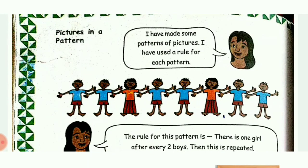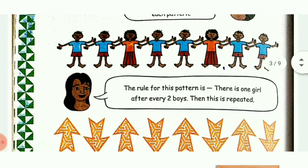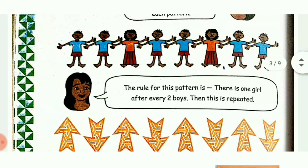Next: pictures in a pattern. I have made some patterns of pictures and used a rule for each pattern. The rule for this pattern is: there is one girl after every two boys, then this is repeated. See the picture - two boys, one girl, two boys, one girl. This is the pattern.